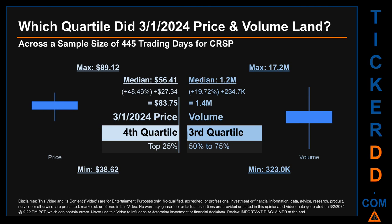Hello, my name is Maria. Which quartile did the 1st of March, 2024, price and volume land in, across a sample size of 445 trading days? The maximum end-of-day price for CRSP was $89.12, while the minimum was $38.62. Within that price range, the 1st of March, 2024, price of $83.75 landed within the fourth quartile, meaning it was within the top 25% of all sampled end-of-day prices.